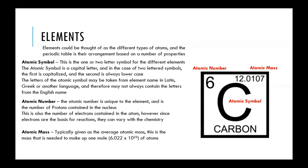On the periodic table, it's arranged in such a way that you can see properties. The most basic values that exist in almost all periodic tables are the atomic symbol, the atomic number, and the atomic mass.